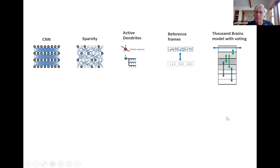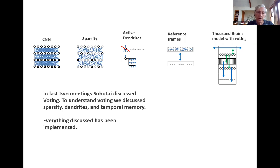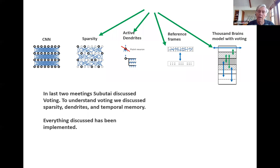In the last two meetings, Supertide discussed voting. And to understand voting, we had to understand sparsity, active dendrites, and the temporal memory algorithm — the layer. Pretty much everything we discussed in the last two meetings are stuff that we've implemented. We had code, we've tried it out, we've experimented with it, and we've done some empirical testing.